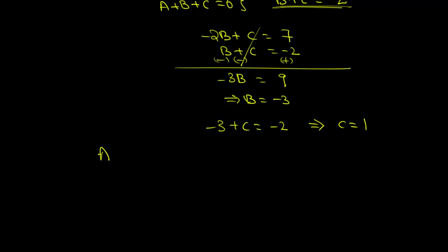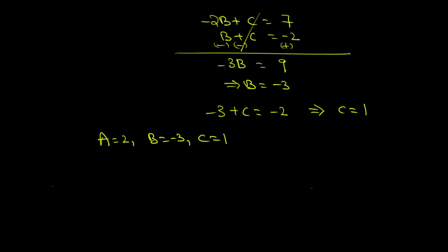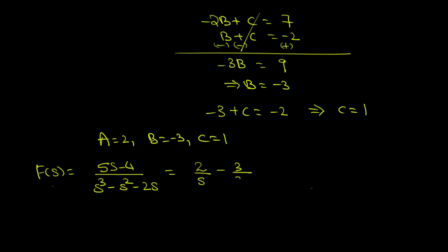Therefore we have A equals 2, B equals minus 3, and C equals 1. Hence, f(s) equals (5s minus 4) divided by (s cubed minus s squared minus 2s) equals 2 over s, minus 3 over (s plus 1), plus 1 over (s minus 2).